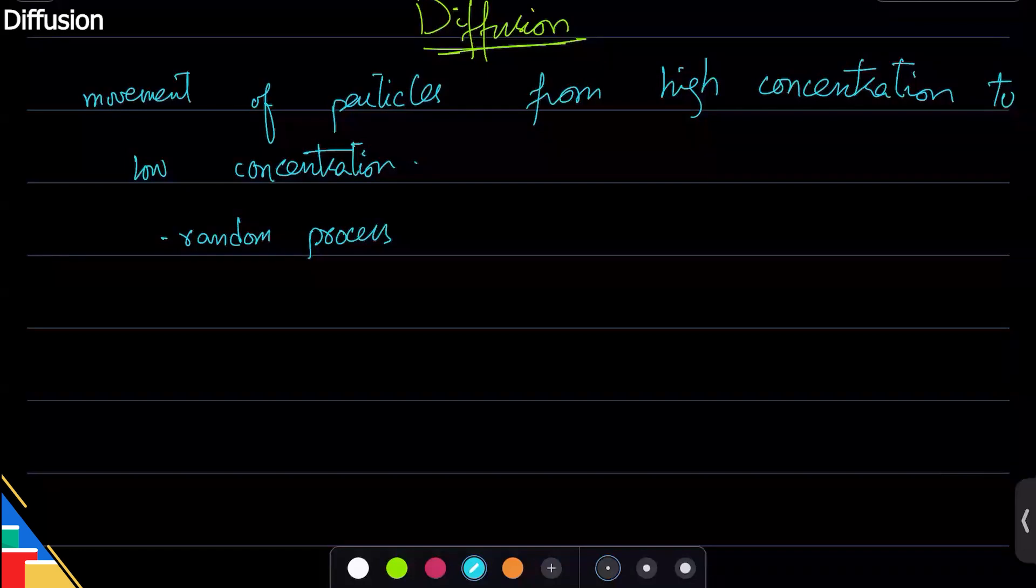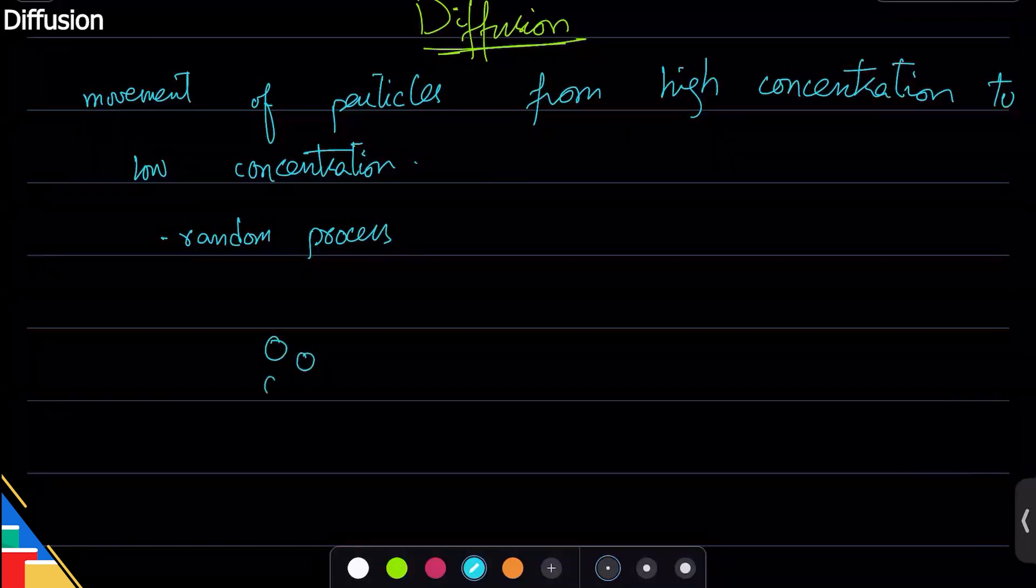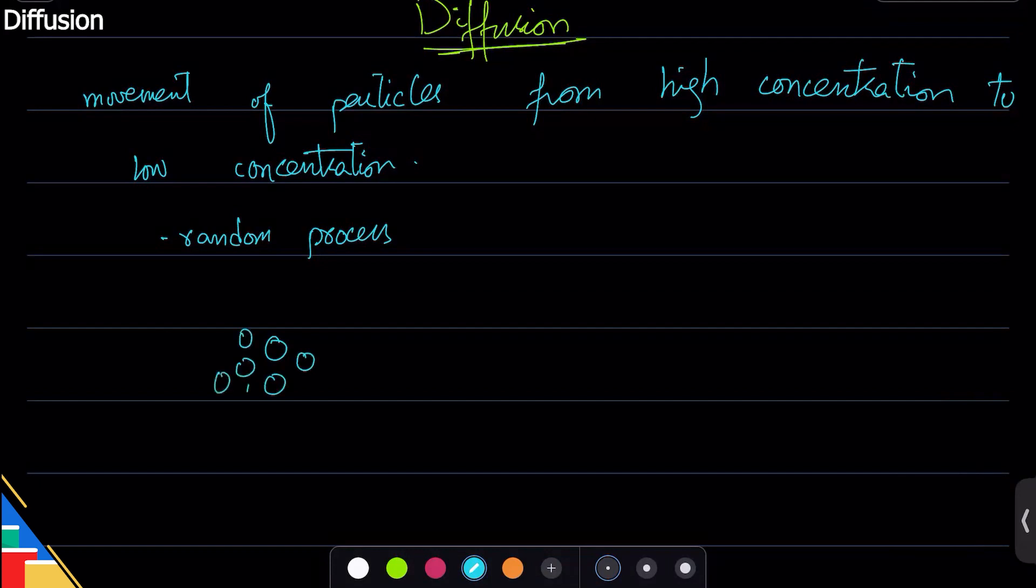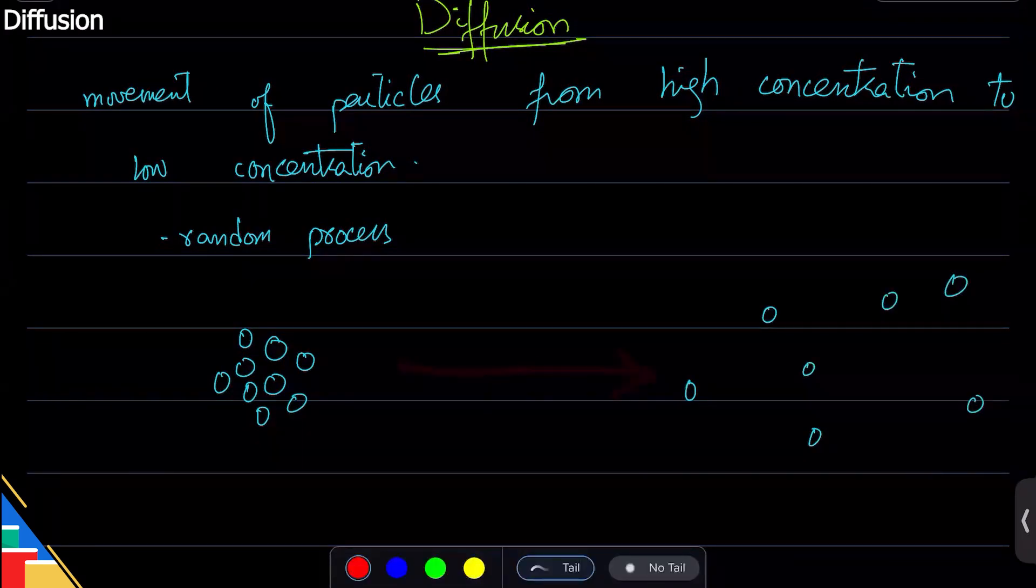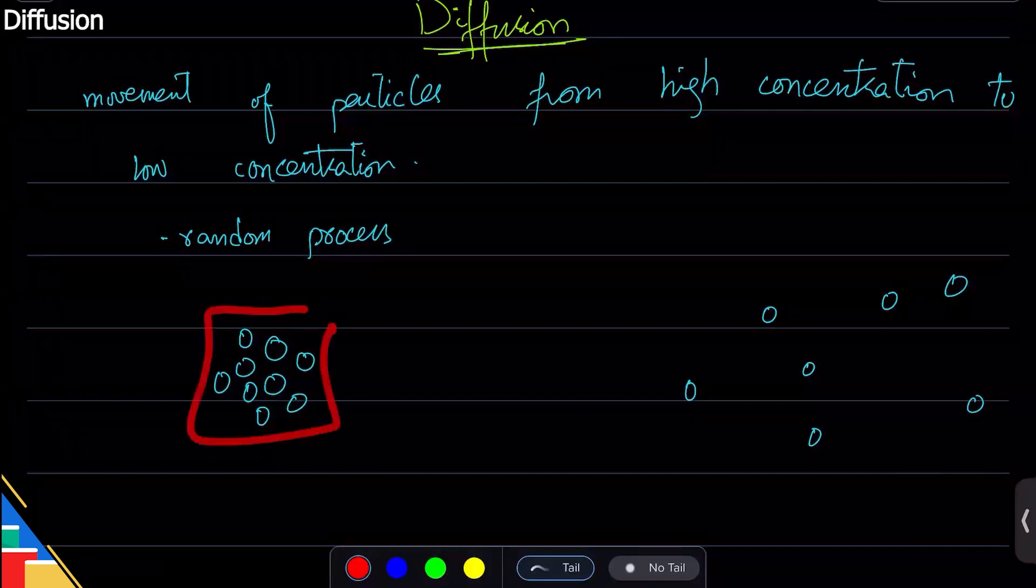So they're all moving randomly. High concentration is when they're really close together. So let's say this is a particle - they are constantly moving, they are random sure, but they're constantly moving and constantly hitting each other, and eventually what happens is that they all go further and further away from each other.